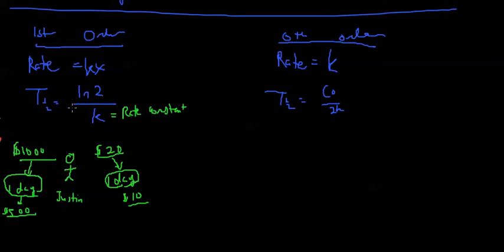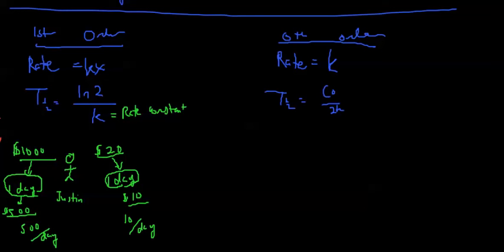So this is the analogy for first order. Half-life is going to be the same no matter what — it's a constant, because k is the rate constant. It's not going to be dependent on how much you start with. He starts with $20 or $1,000, it doesn't matter — it takes him one day to get down to half. But his rate of spending has increased because he has more money. Rate is dependent on your starting amount — $10/day with $20, but $500/day with $1,000. Same half-life, but rate increased.